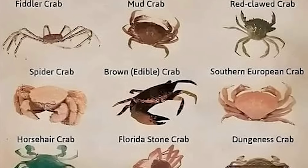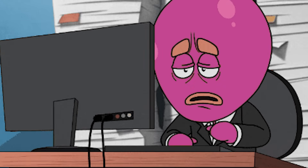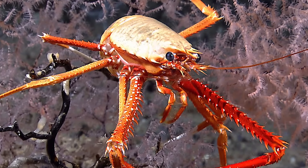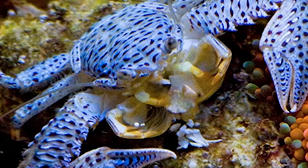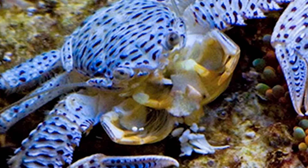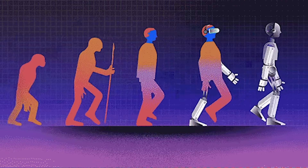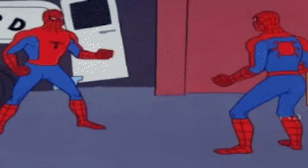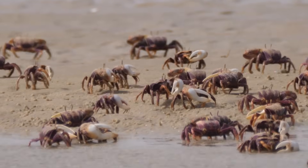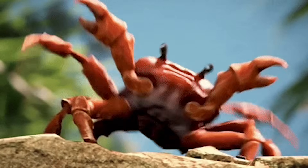Somewhere along the line, one branch of hermit crabs decided to ditch the shell thing — their tails hardened up, their bodies flattened out, they tucked what was left of the tail underneath, and by the time they were done they looked exactly like a crab, even though genetically they're still hermit crabs who just evolved the costume. This matters because it means carcinization isn't just one family of crabs branching out — it's completely separate families independently copying the crab body plan. What we're watching is parallel invention on a massive scale, where evolution keeps running different experiments and somehow keeps arriving at the same answer.